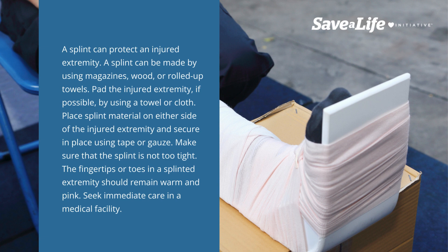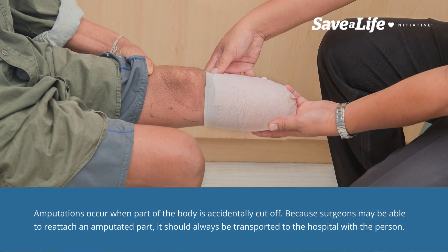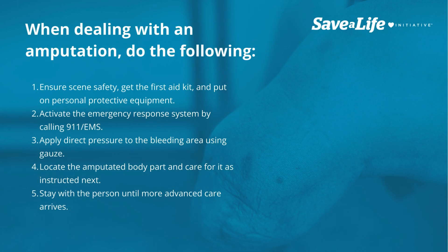The fingertips or toes in a splinted extremity should remain warm and pink. Seek immediate care in a medical facility. Amputations occur when part of the body is accidentally cut off. Because surgeons may be able to reattach an amputated part, it should always be transported to the hospital with the person. When dealing with an amputation: one, ensure scene safety, get the first aid kit, and put on personal protective equipment; two, activate the emergency response system by calling 911 or EMS; three, apply direct pressure to the bleeding area using gauze; four, locate the amputated body part and care for it as instructed.